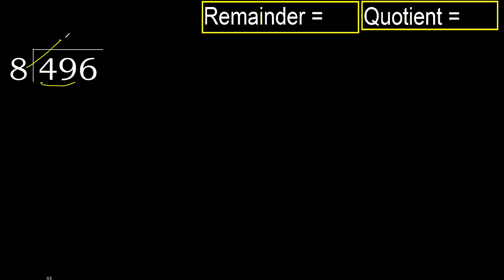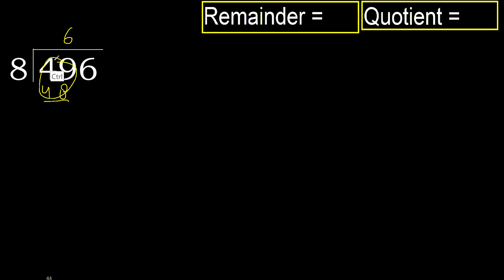8 multiply by 6 is 48, which is not greater. Ok, subtract. 49 minus 48 is 1. Next, bring down 16.